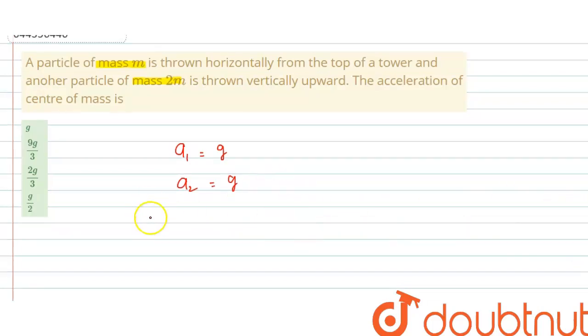From here we can calculate acceleration of center of mass. So acceleration of center of mass is equals to m1 a1 plus m2 a2 divided by m1 plus m2. m1 is m, so m into g plus m2 is 2m, so 2m into g upon m plus 2m.